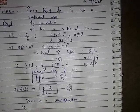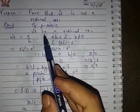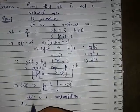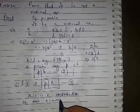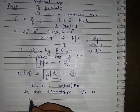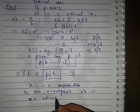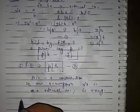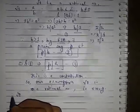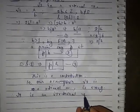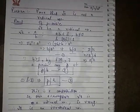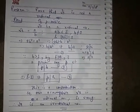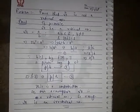So our assumption that root 2 is a rational number is wrong, and hence we can conclude that root 2 is an irrational number. I hope all of you understood this theorem. That's it for today, thank you.